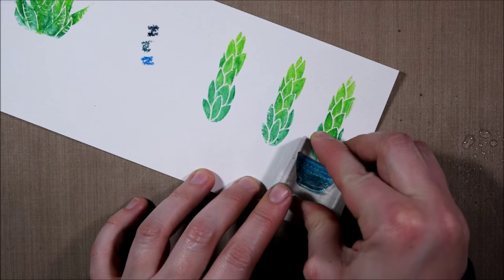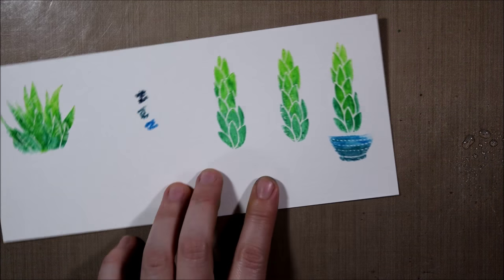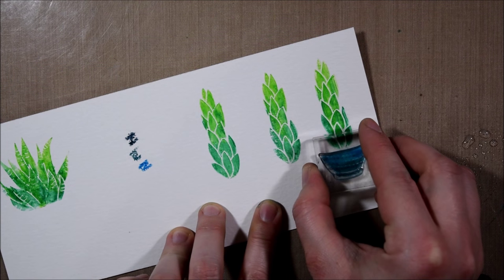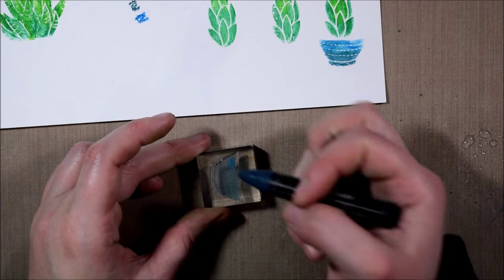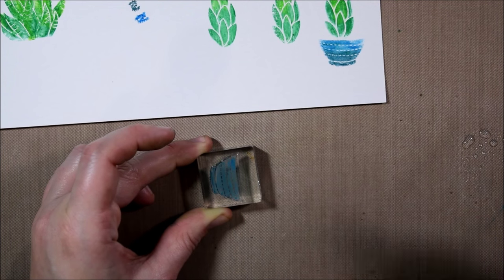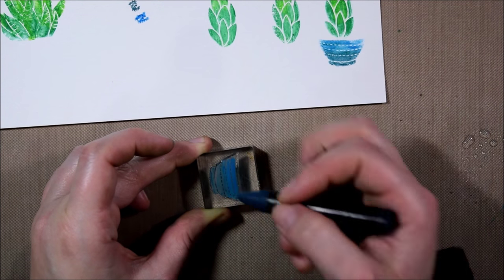Basically here, if I know that I'm using some reds and oranges and also some greens, the next natural complement is a blue. So I picked out some blues for the pots, also from the Waffle Flower stamp set, and I'm doing the same exact technique.